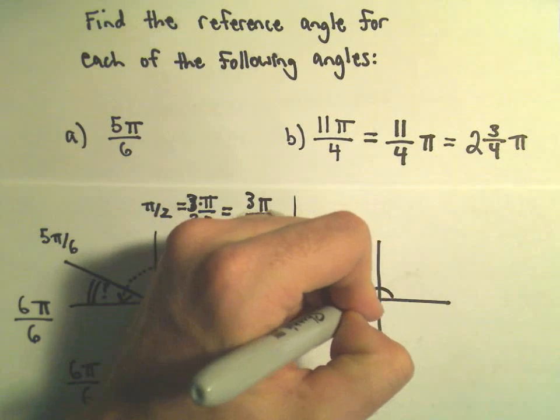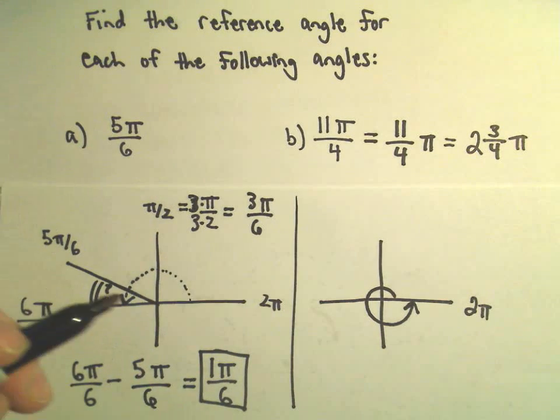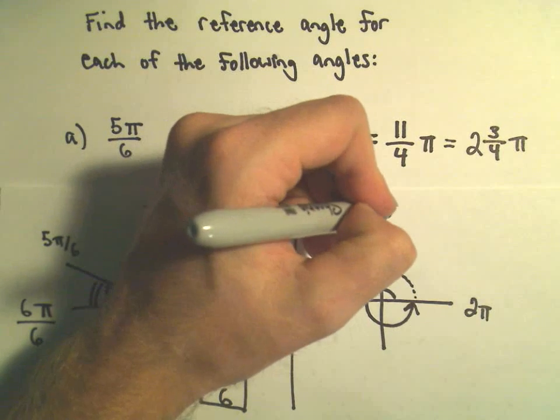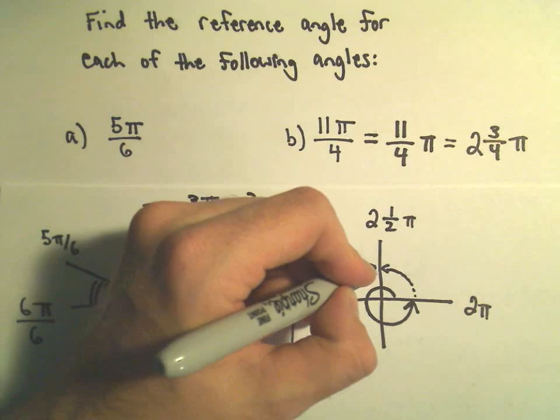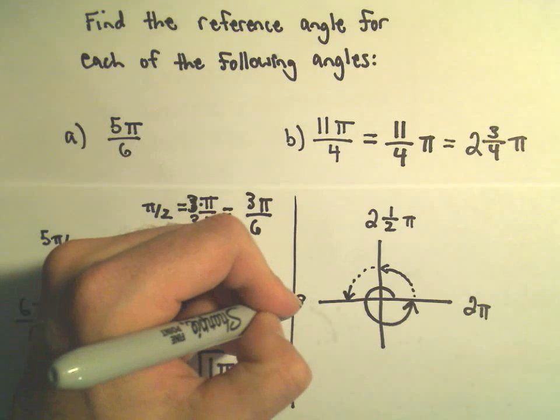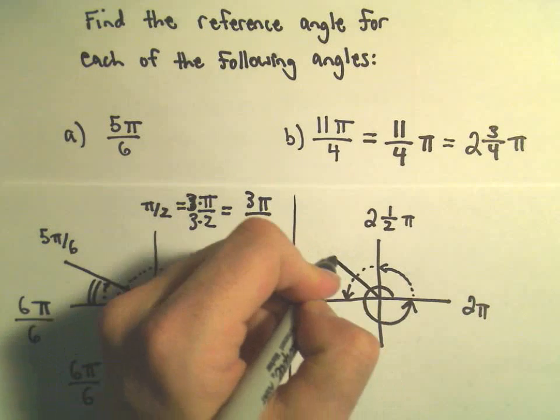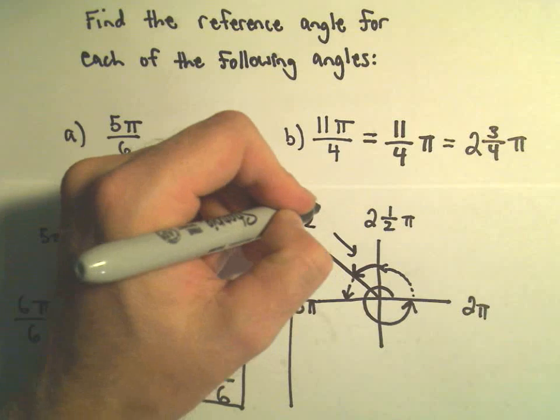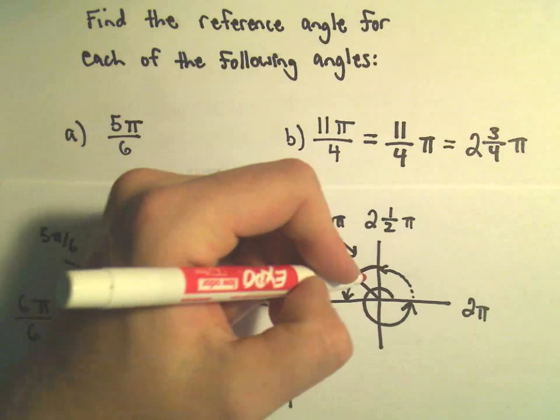One trip around, we would have gone 2π radians. At the top of the circle, if we made it to the top, that would be 2 and another 1 half π, or π over 2. If we made it all the way to the x axis, we would have gone a distance of 3π. So I know that 2 and 3 quarters is somewhere here in the middle. This is 2 and 3 quarters π, but I just want this little angle here in between.